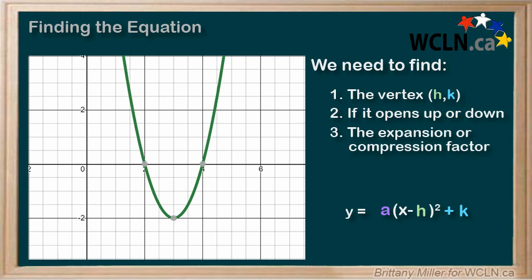This is a little bit trickier, but I'll show you how I do it. First things first, our vertex is the top or bottom of the U. On this graph, it's here at 3, negative 2. This means that h is 3 and k is negative 2.